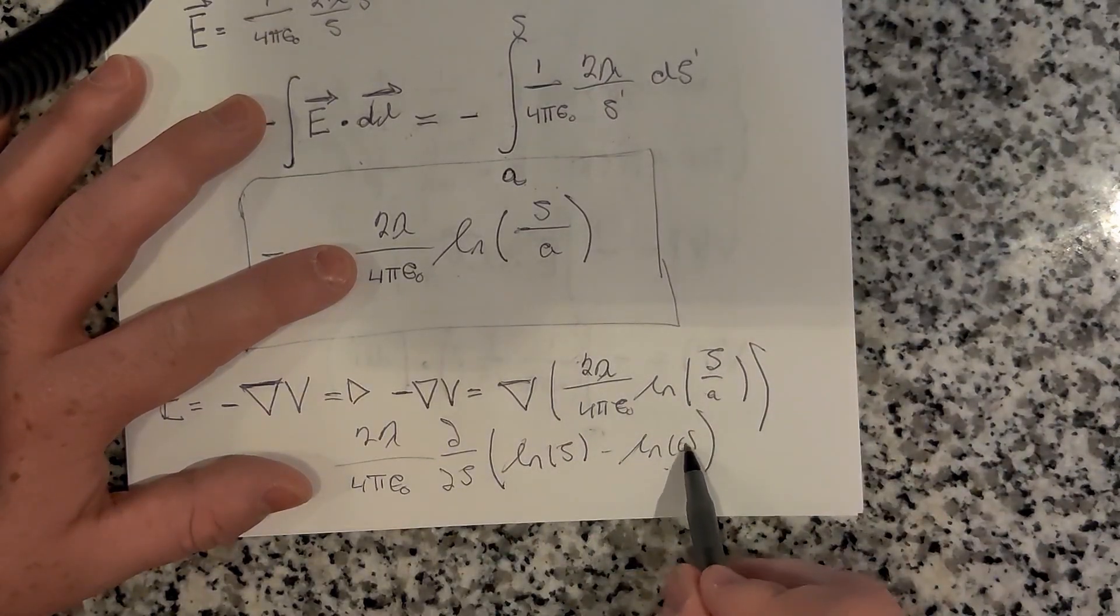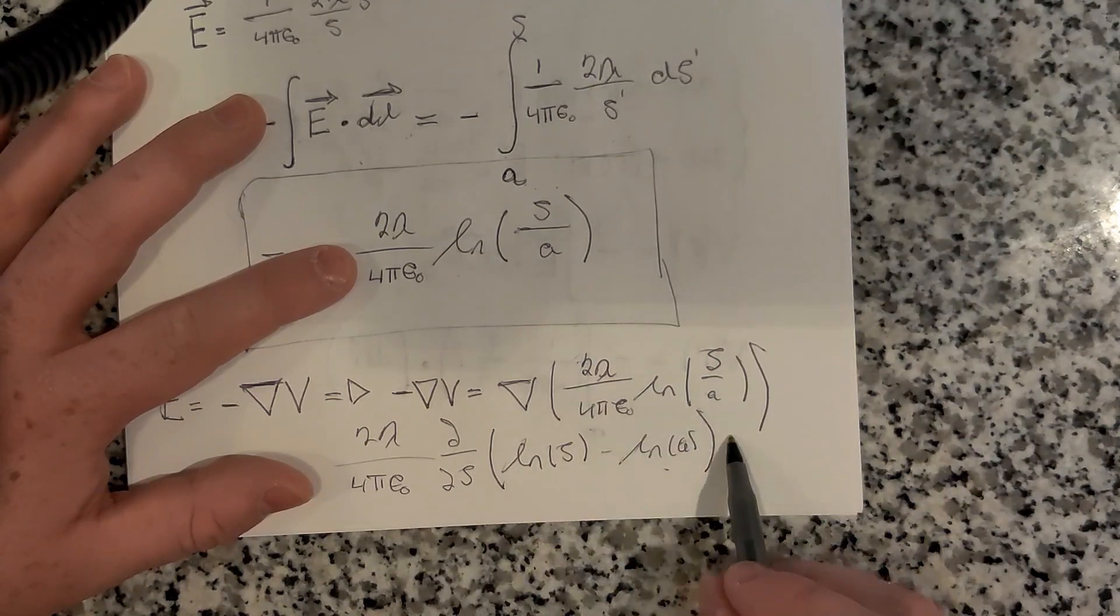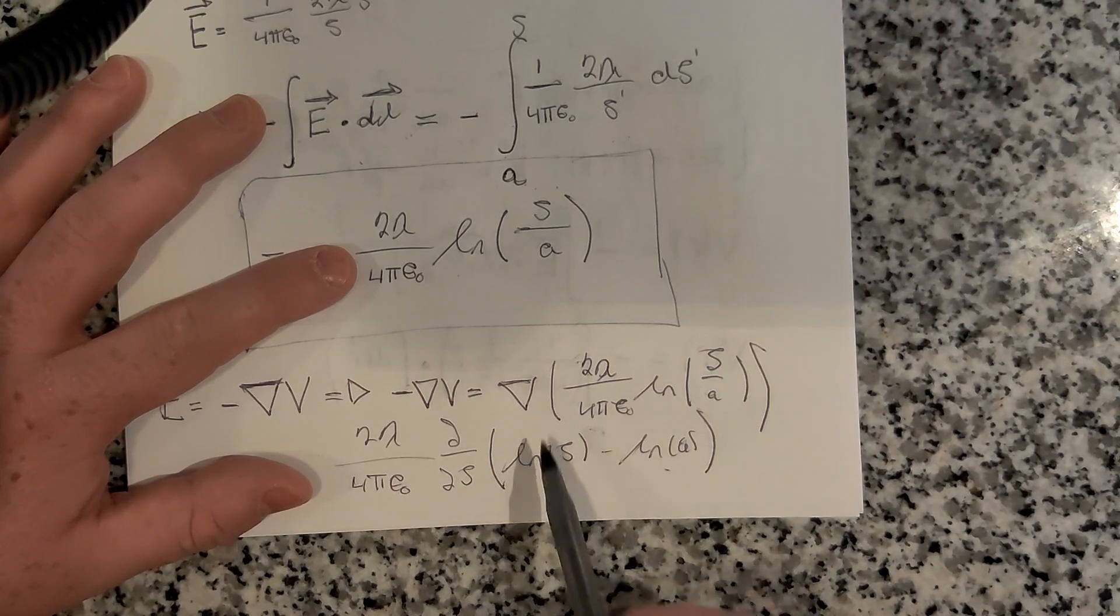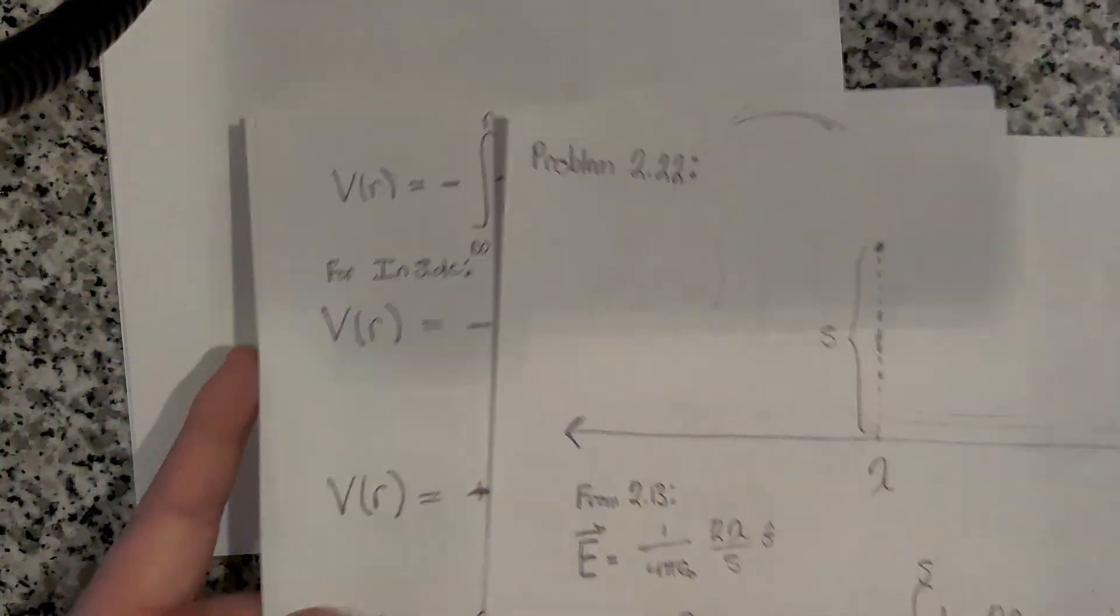And a is a constant here. So when you do this, this is just a constant, so that's zero. We just have this. The derivative of the natural log of s will be 1 over s.